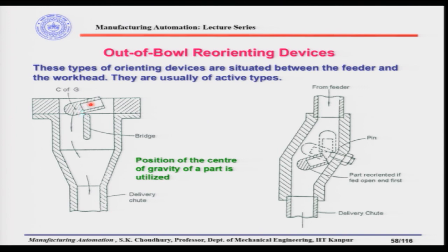If a part is coming with the heavier side up and the desired orientation is heavier side down, a pin can be placed in the delivery chute. When parts from the feeder hit the pin — whether coming with the heavier side up or down — they are reoriented and always exit with the heavier side down, which is the desired orientation. This is an example of an active out-of-bowl orienting device.